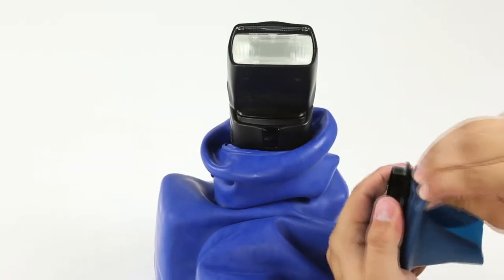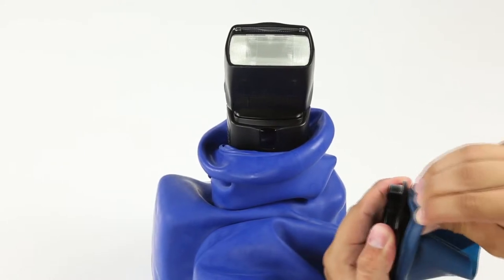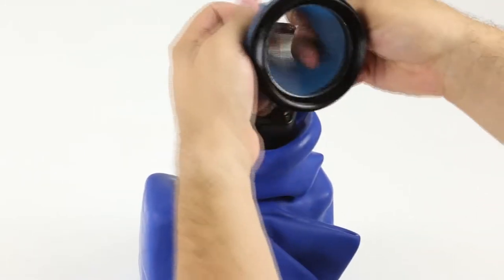Apply the flash lens into the flash glove by lining the thick lip of the glove over the flash lens rim opening.